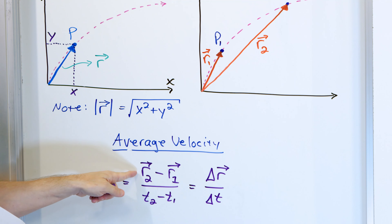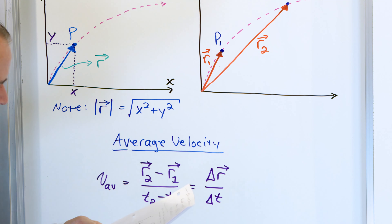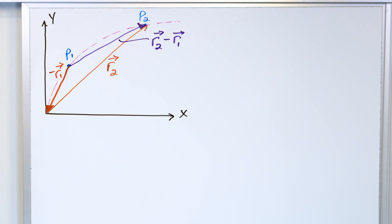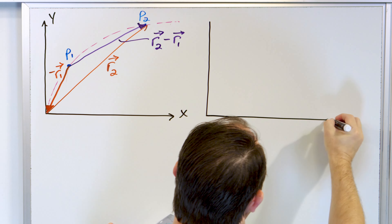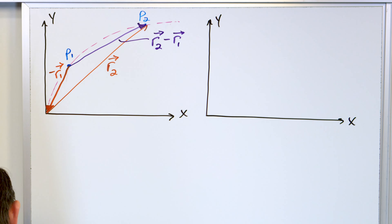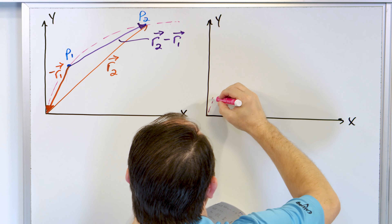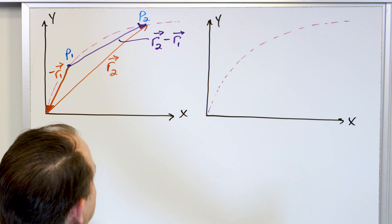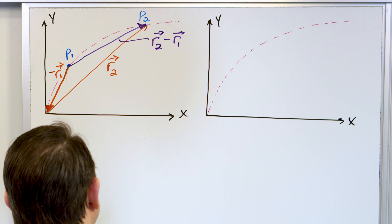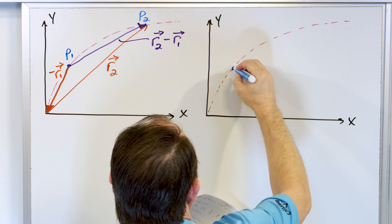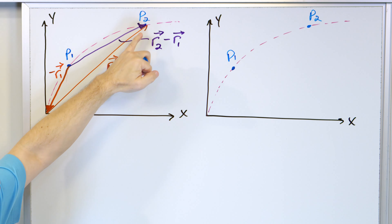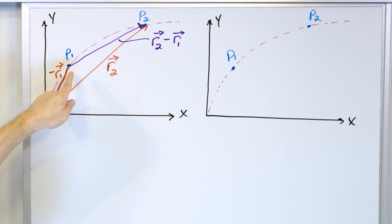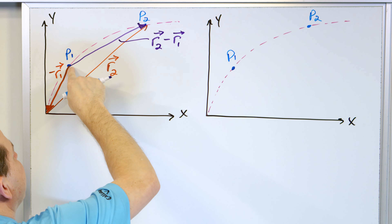So in order to calculate the average velocity, we take R2 vector minus R1 vector. Let me redraw this cleanly. Here's x, here's y. We had position P1 of the ball and position P2 of the ball. R2 was the position vector to P2, R1 was the position vector to P1 — but we want to subtract it, so we flip it around to make it negative. When we add R2 and negative R1 — which is the same as R2 minus R1 — the resultant is a vector that starts from P1 and ends at P2.